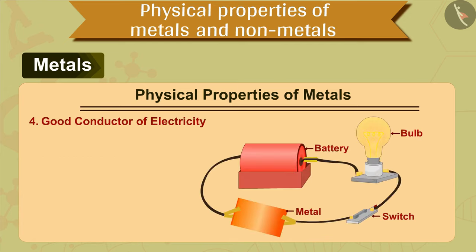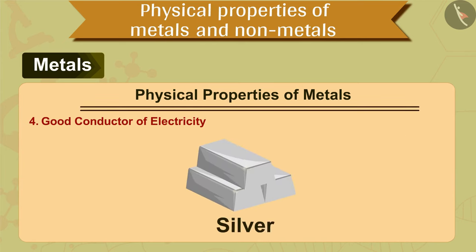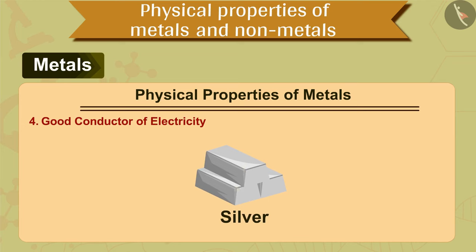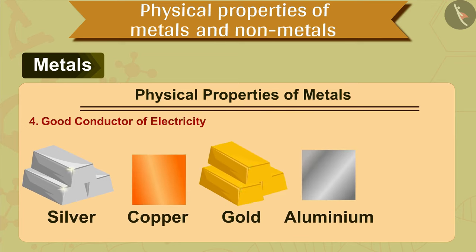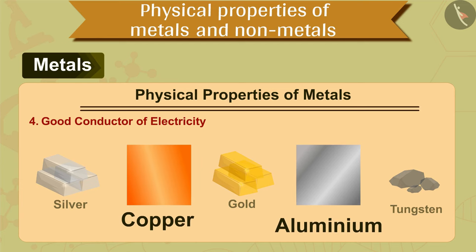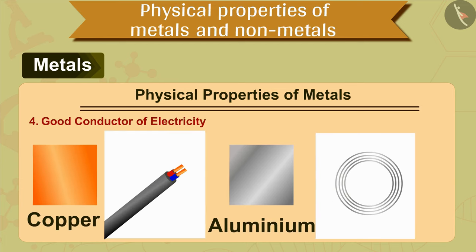The fourth property is that metals are good conductors of electricity — that is, they allow electric current to pass through them easily. Silver is the best conductor of electricity. Copper is the next best, followed by gold, aluminum, and tungsten. Electric wires are mostly made of copper and aluminum because they are very good conductors and less expensive compared to silver.